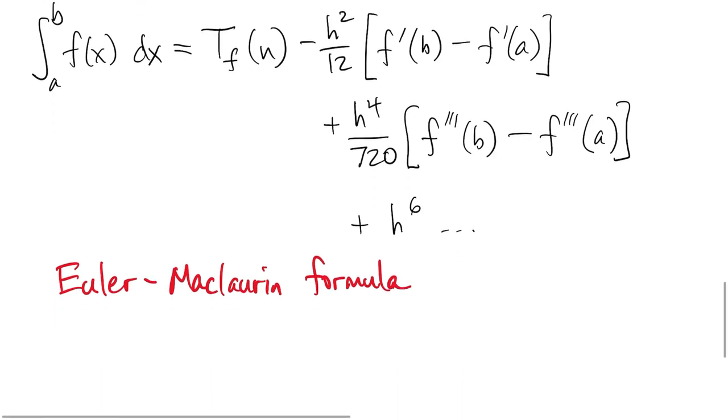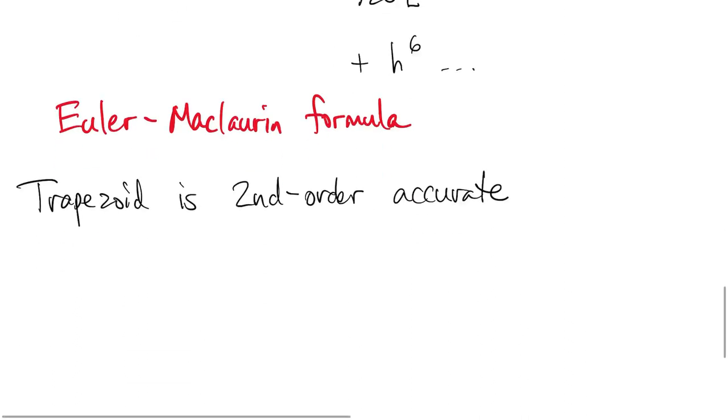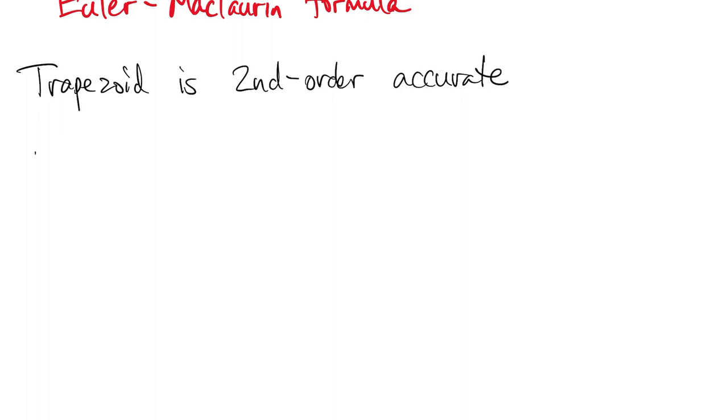From the standpoint of the trapezoid formula, Euler-Maclaurin says that the leading order of the error is second order. From here, there are at least two ways you could get formulas of higher order of accuracy.